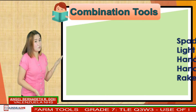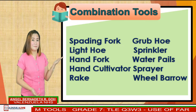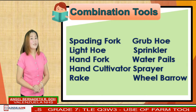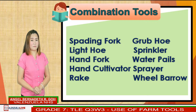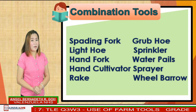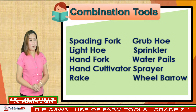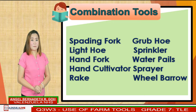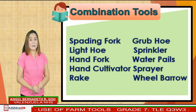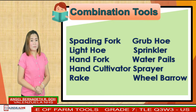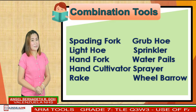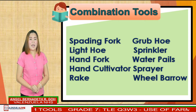Combination tools, also called multi-function tools, include: spading fork, light hoe, hand fork, hand cultivator, rake, grab hoe, sprinkler, water pails, sprayers, and wheelbarrow.